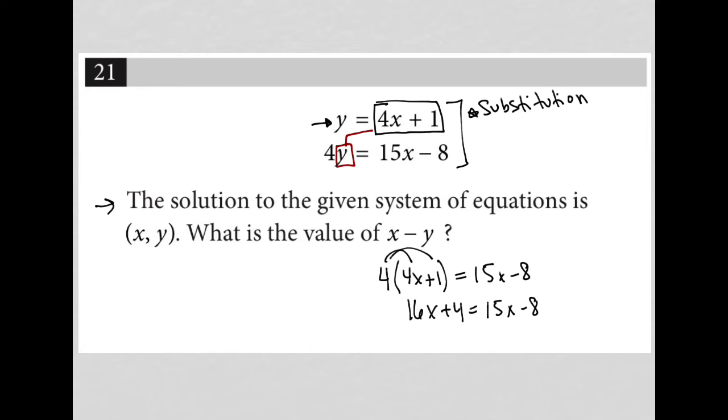Let's do some combining of like terms. Subtract 15x from both sides. Subtract 4 from both sides. This leaves me with just x, x is equal to negative 12.